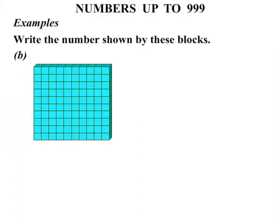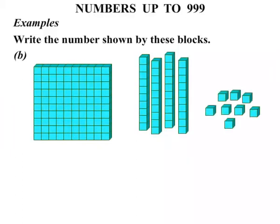Part B. We have 1 flat, a few longs, and some shorts as well. OK, so we just got the 1 flat, so that is just 100. OK, these longs are worth 10 each, so we have 10, 20, 30, 40. So let's write the 40 down.